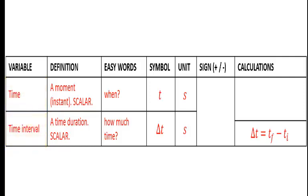So what does time mean? Time means when, whereas time interval means how much time or how long did it take. In symbols, we show the difference between time and time interval by using a T or a delta T.